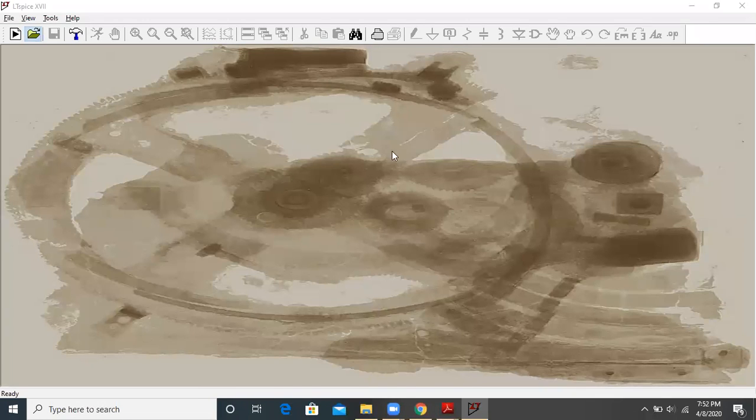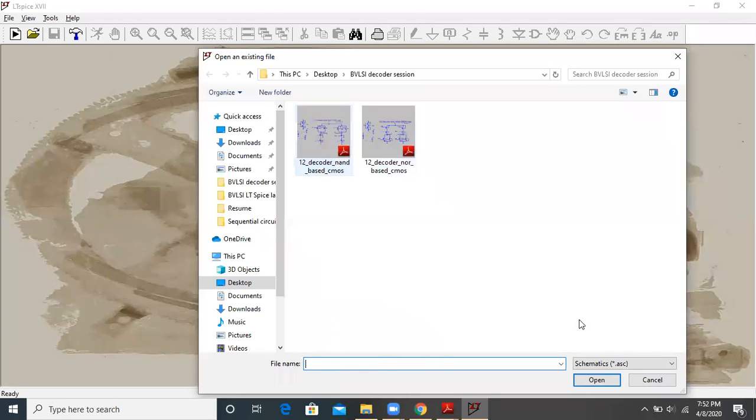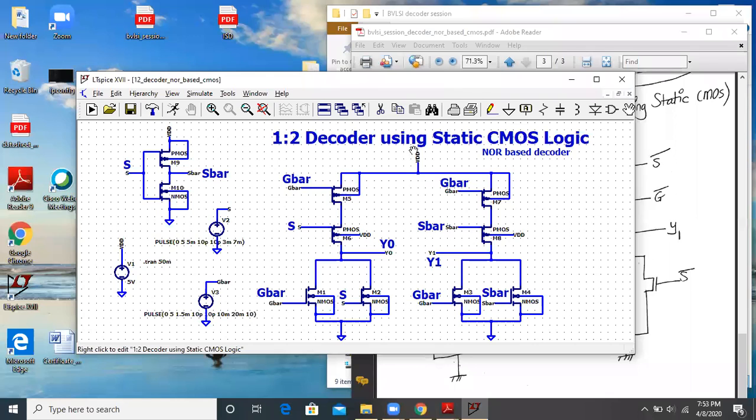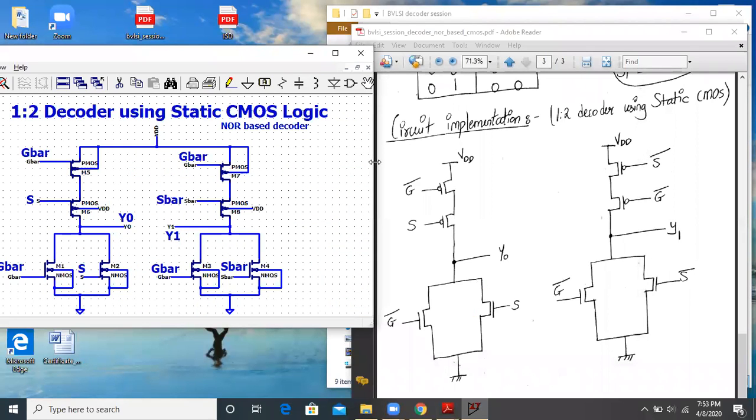So it's a 1:2 NOR based design. This is my 1:2 decoder using static CMOS logic. Now, if I minimize this and show it to you, it is the one and the same only.